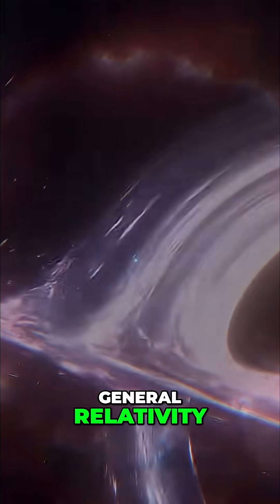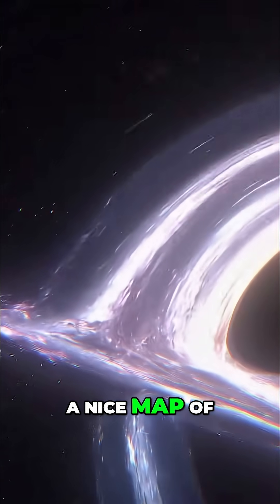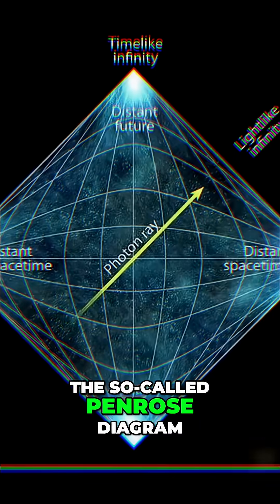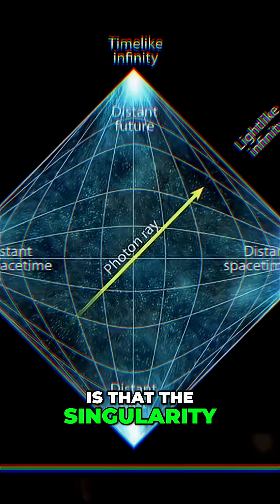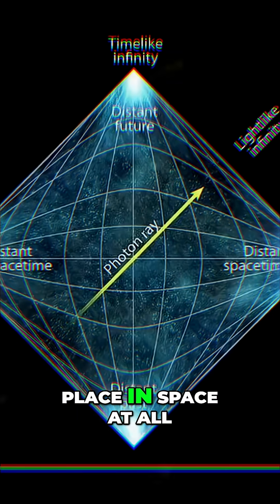just even in pure general relativity, when you look at a nice map of a black hole, the so-called Penrose diagram named after Roger Penrose, what you see is that the singularity is not really a place in space at all.